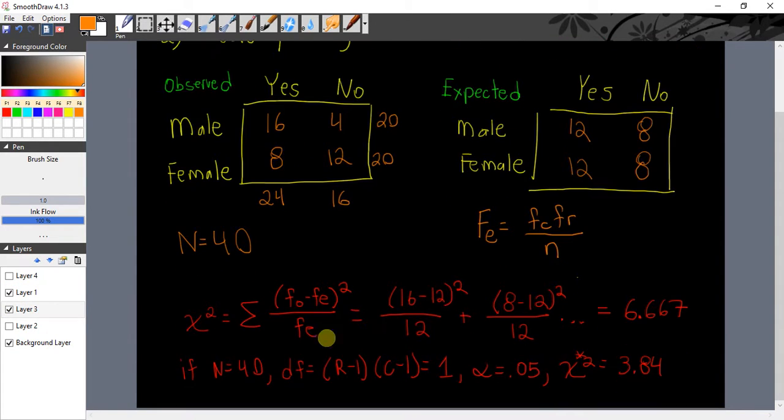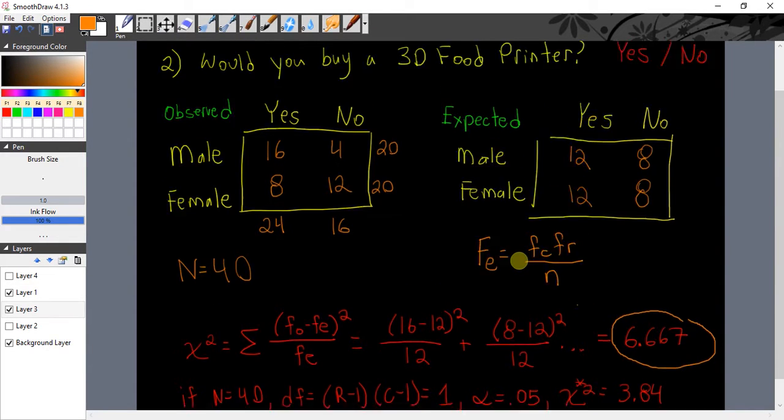Let me just bring up the calculations here. Our formula for chi-square is the frequency observed minus the frequency expected squared over the frequency expected, and you're going to have in this case four separate values here that you're going to add up in the end and you're going to get a value of 6.667. We have a sample size of 40. Our degrees of freedom is the number of rows minus one times the number of columns minus one, which comes out to being just one. And if we choose an alpha level of 0.05, our critical chi-square is 3.84. So clearly that's significant, that's pretty significant.